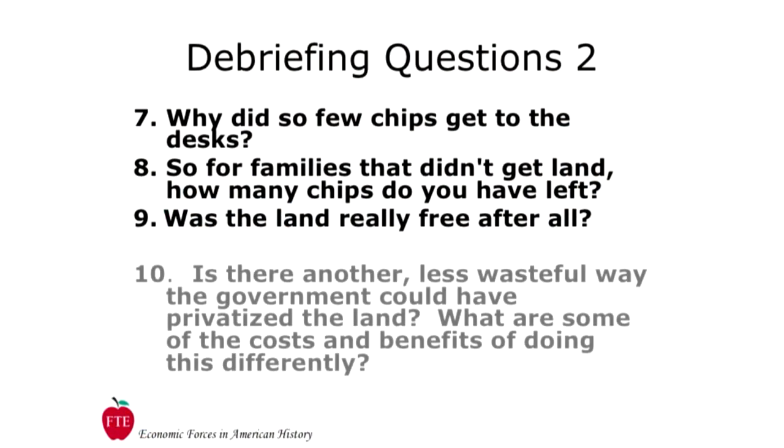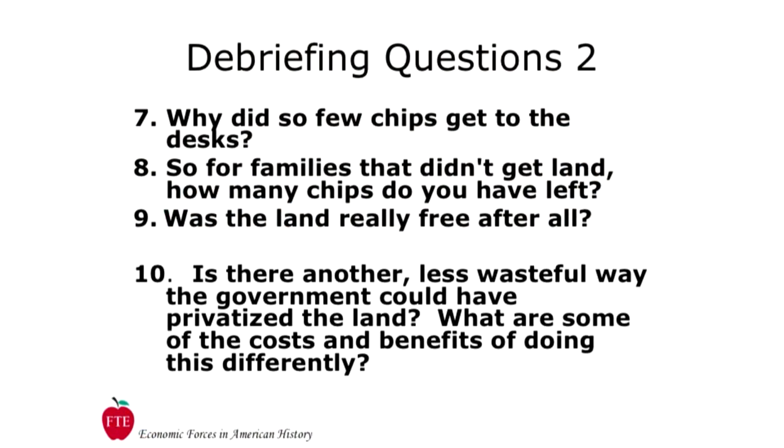Just because you take the price away from something, it doesn't mean it's not scarce anymore. If something is scarce, people still have to compete for it. One way to compete is with price, but there are other ways — a dance-off, arm wrestling. When you take away price, people just compete in some other way. In this case, there was no price; the land was being given away free. So how did you compete for the land? You raced for it. This type of allocation created incentives that resulted in waste and inefficient use of resources as they raced to capture the scarce land.